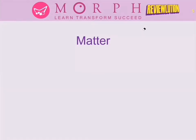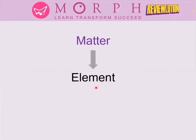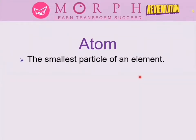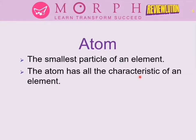An element is a substance that you can no longer divide into a simpler substance. All elements are made up of particles that carry all the characteristics of that element. The smallest particle that retains all the characteristics of an element is called an atom. The atom is the smallest particle — if you divide it further, it will no longer form the same element.